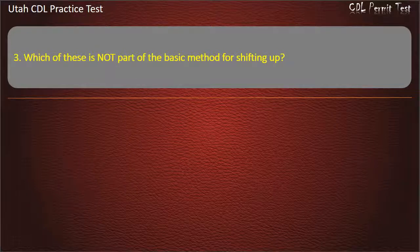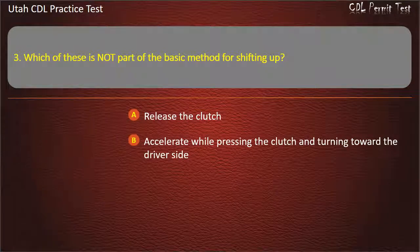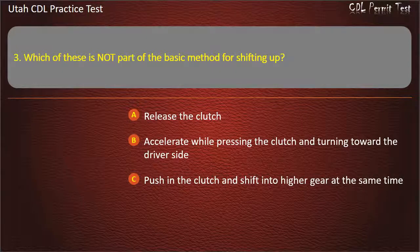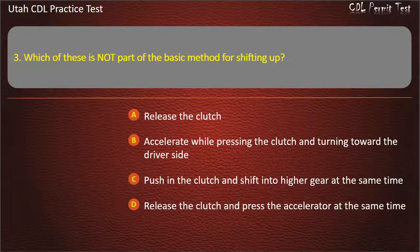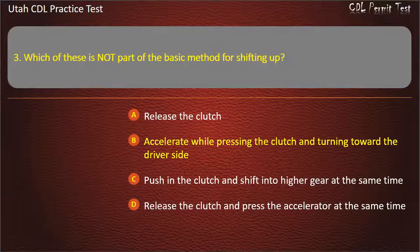Question 3. Which of these is not part of the basic method for shifting up? Release the clutch. Accelerate while pressing the clutch and turning toward the driver's side. Push in the clutch and shift into higher gear at the same time. Release the clutch and press the accelerator at the same time. Answer: Accelerate while pressing the clutch and turning toward the driver's side.